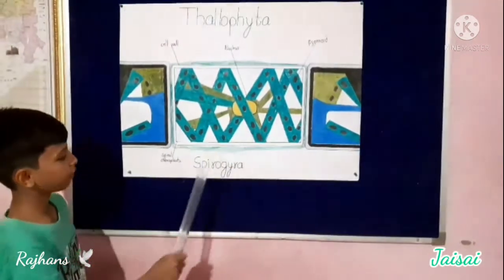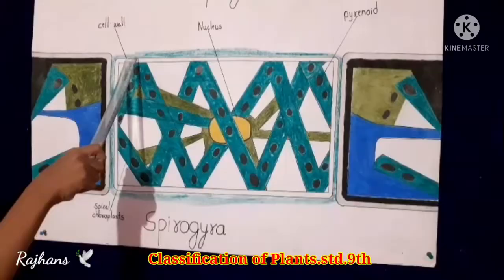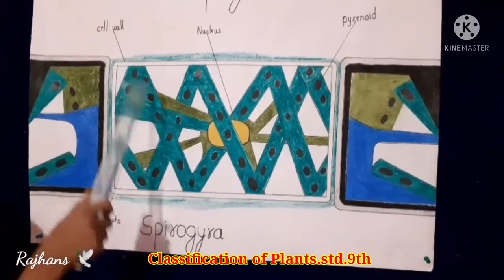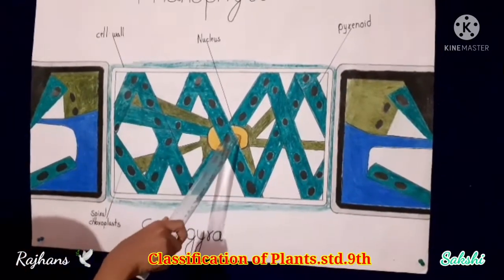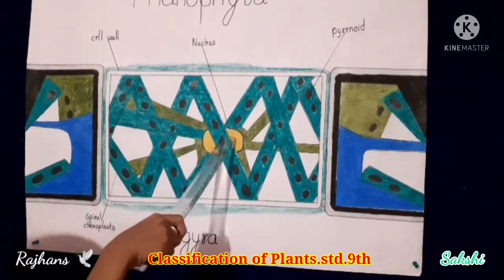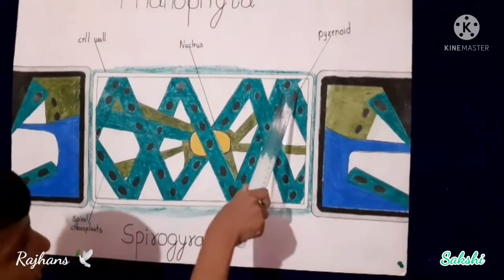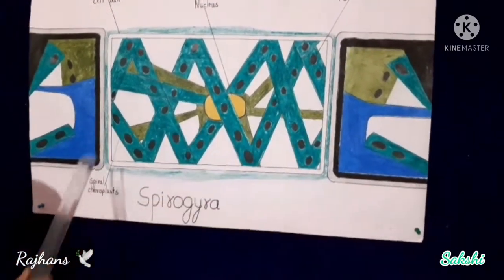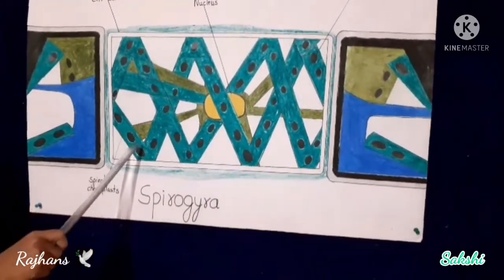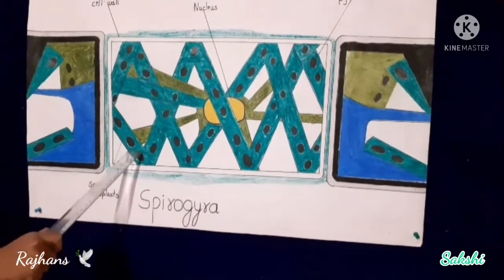This is spirogyra. This is the cell wall, this is the nucleus, this is the pyrenoid, and this is the spiral chlorophyll.